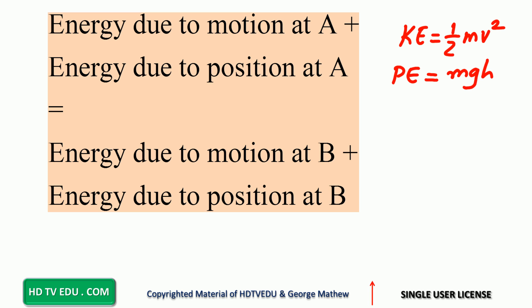Since the object starts from rest, the kinetic energy at point A is zero. Energy due to position at A is mgh, where h is positive 12 meters. That sum equals energy due to motion at B plus energy due to position at B.